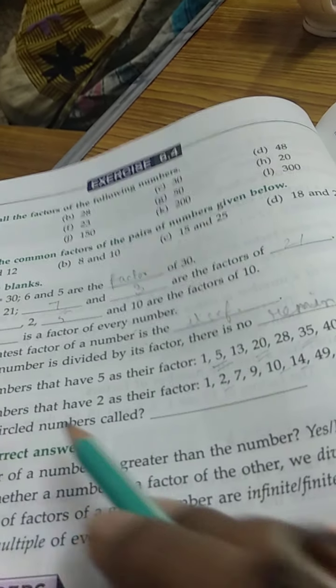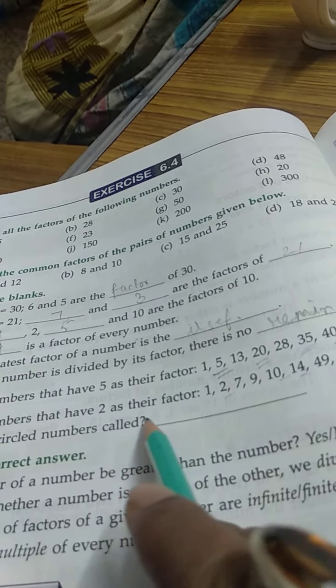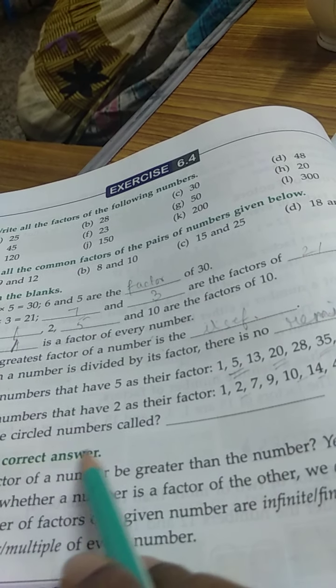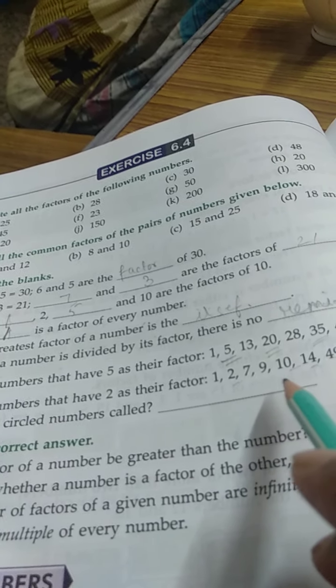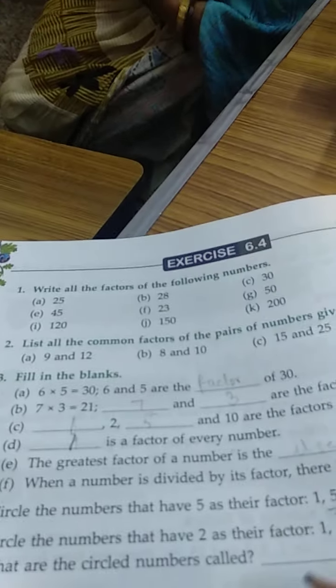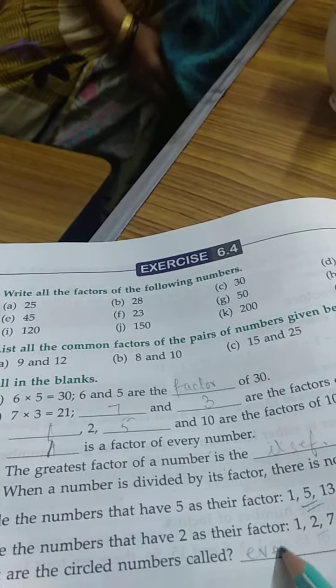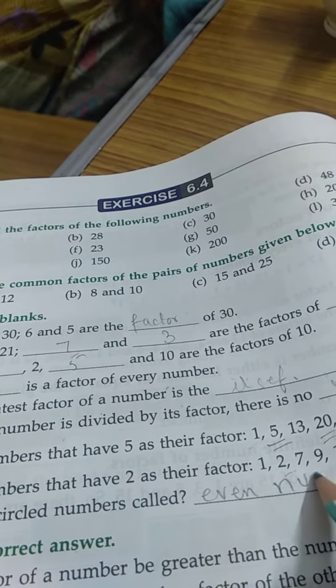Circle the numbers that have 2 as their factor. What are the circled numbers called? Circled numbers are called even numbers. Complete chapter 4.